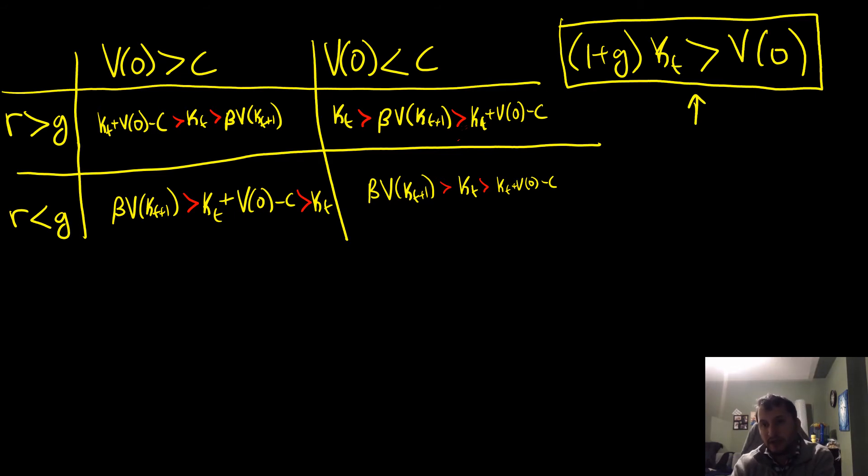the growth of our capital stock, or our capital stock in the next period, is going to be greater than the value of our empty land. This is going to be true for all kt, for any period that we have. With that, we're able to identify that in our top left quadrant, our optimal solution is to cut down the tree and replant it - that's the most preferred option. The next